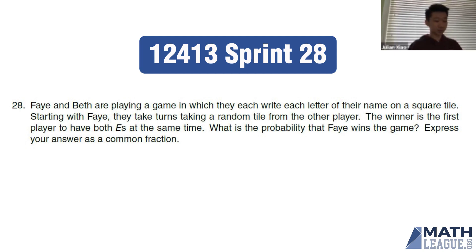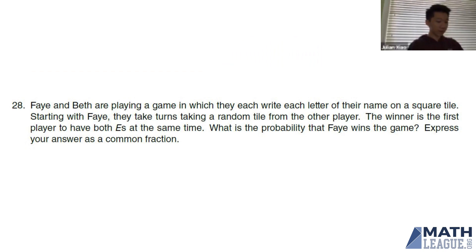So let's first read this problem. Faye and Beth are playing a game in which they each write each letter of their name on a square tile. Starting with Faye, they take turns taking a random tile from the other player. The winner is the first person to have both E's at the same time. What is the probability that Faye wins the game? Express your answer as a common fraction.